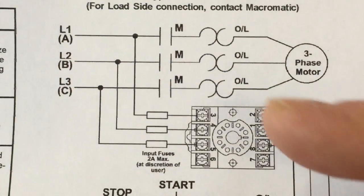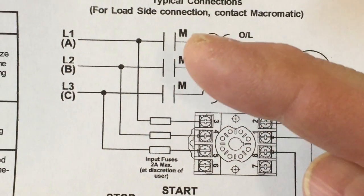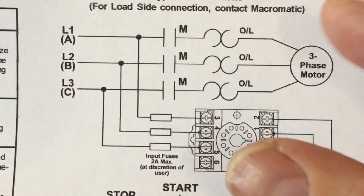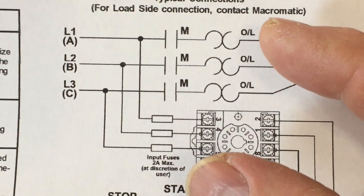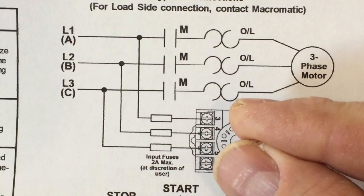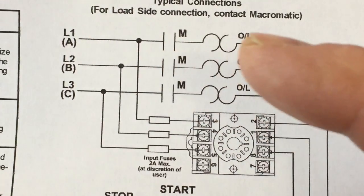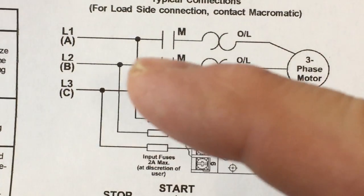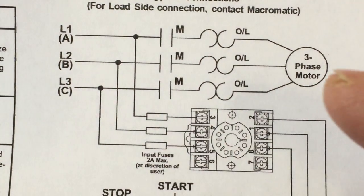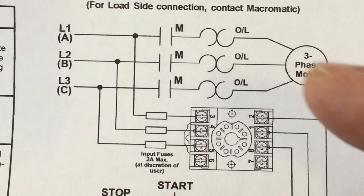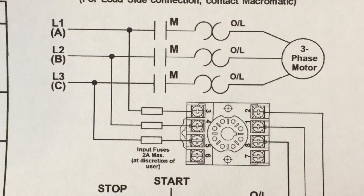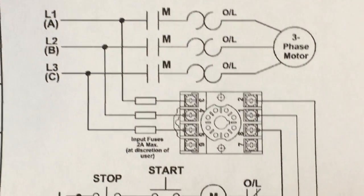Now let's look what else is going on here. Do you see where it says M right here? So these are the normally open contacts. These are the contacts that happen on your mag starter. So when your mag starter engages those contacts close, and then that passes through the voltage through each phase to the three, through the overloads, then to the three phase motor that we're trying to run.